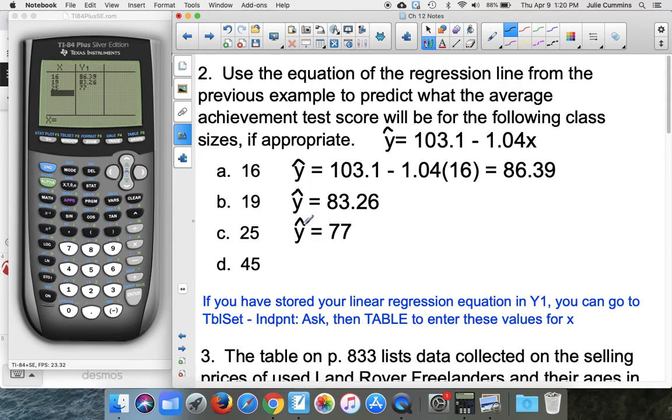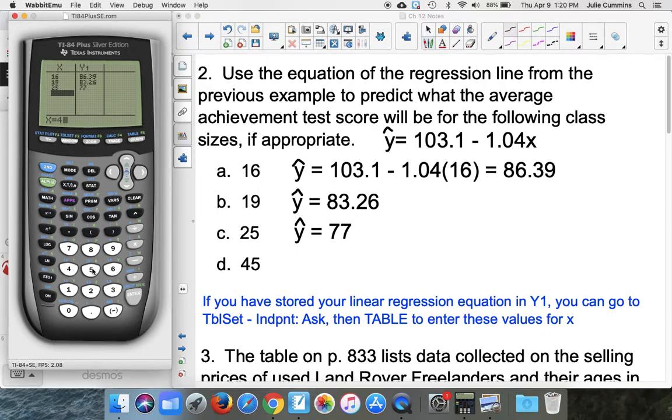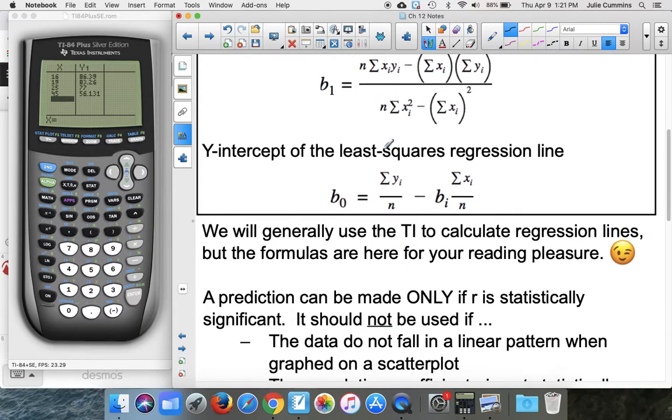Now the last one, I didn't plug that in because we could have a class of 45. And you could go ahead and go over here to your calculator and plug in 45 and say, I mean look, we would expect a class average of 56. But remember, I'm going to refer back to the other notes.